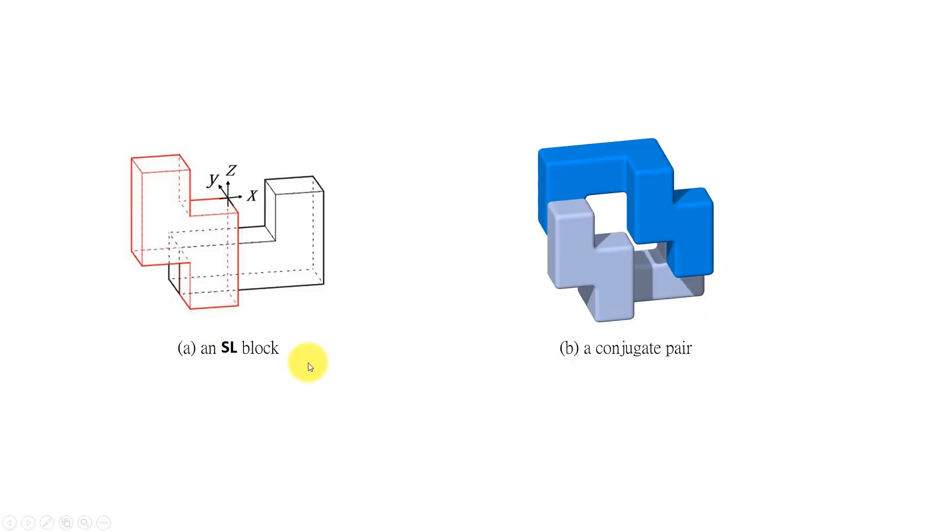On the left hand I show the shape of SL block, so it consists of eight linking cubes. The left hand side is like S-shape and the right hand side is like L, so that's the reason why we call it the SL block.